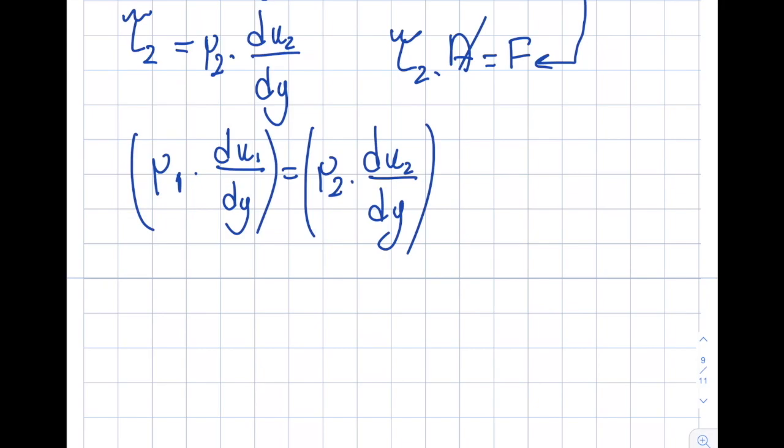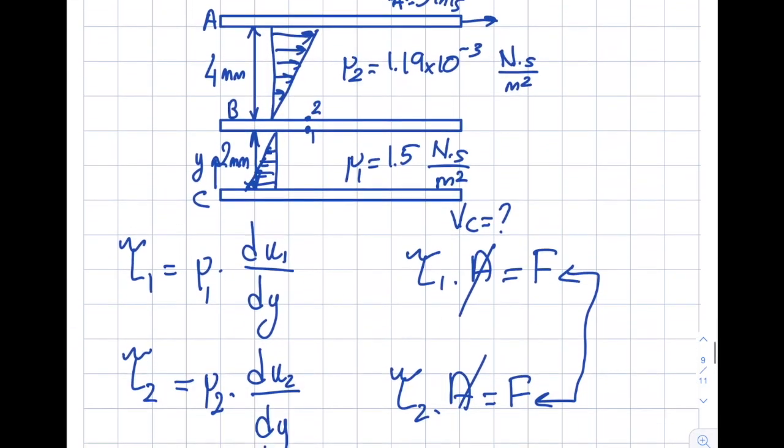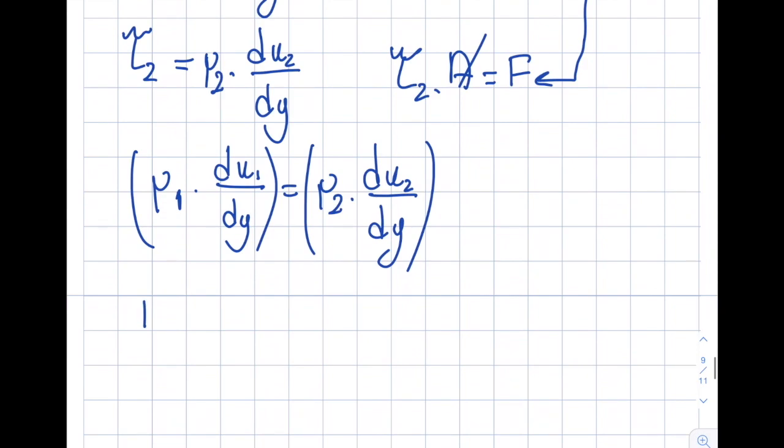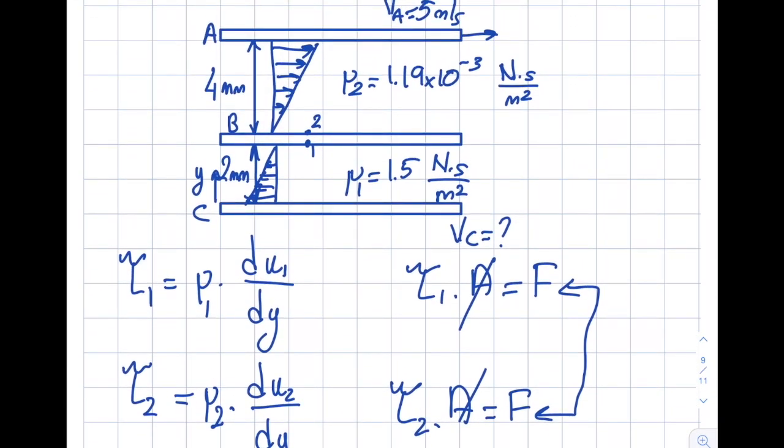Let's write this relationship. First thing I want to look at is the viscosity one is 1.5. So let's just write right over here. And also the viscosity 2 is 1.19 times 10 to the minus 3. So that's given to me. So let's look at this du1 dy. We have to be consistent. If you write the velocity at the top minus the velocity at the bottom over here. You must write the velocity at the top minus the velocity at the bottom in here.